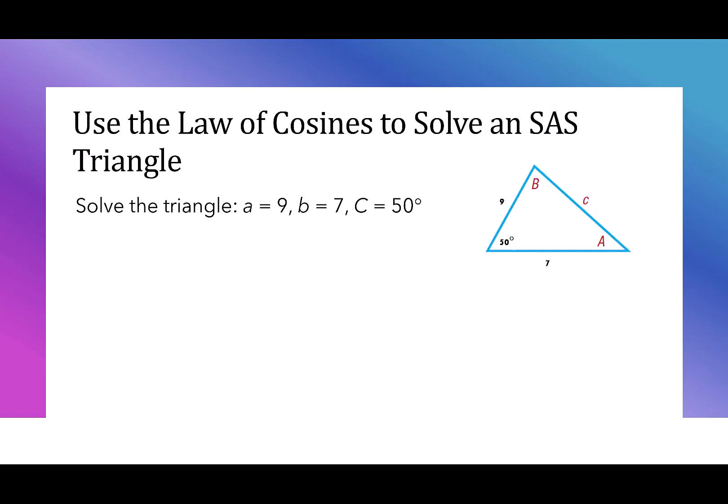For our first example, using the law of cosines to solve a side-angle-side triangle, we have side a equals 9, side b equals 7, and angle C equals 50 degrees. Because we know our angle C, we want to use the equation c squared equals a squared plus b squared minus 2ab cosine of C.